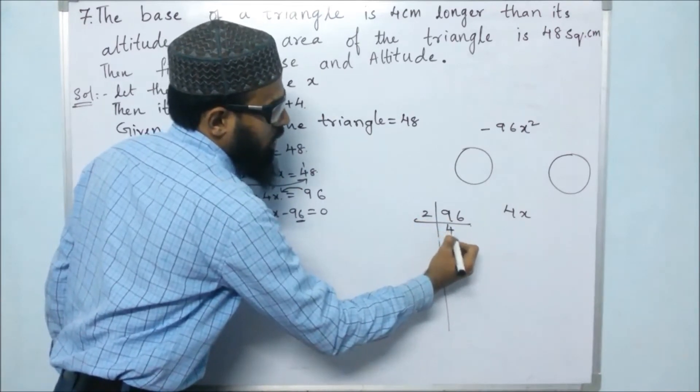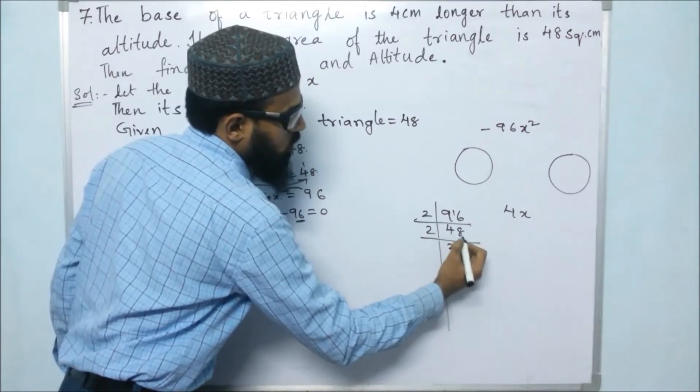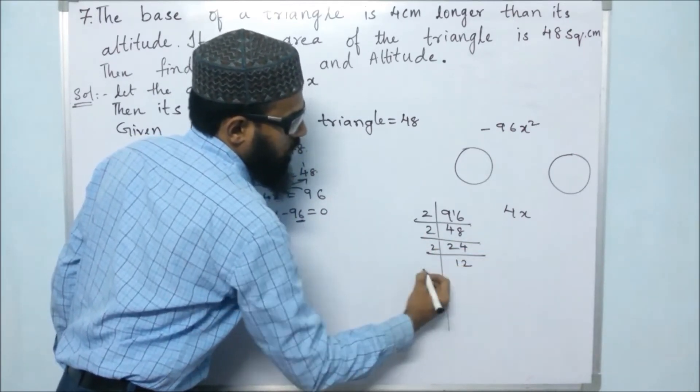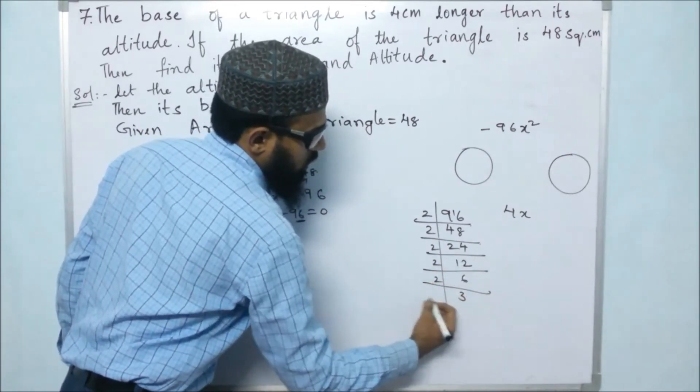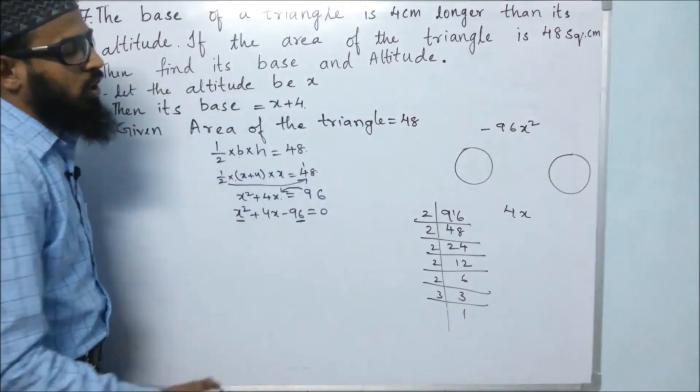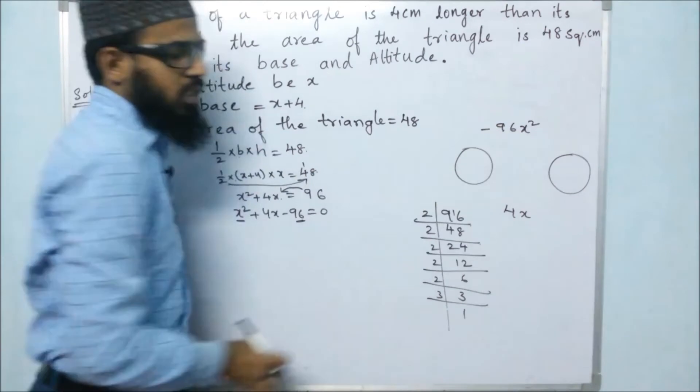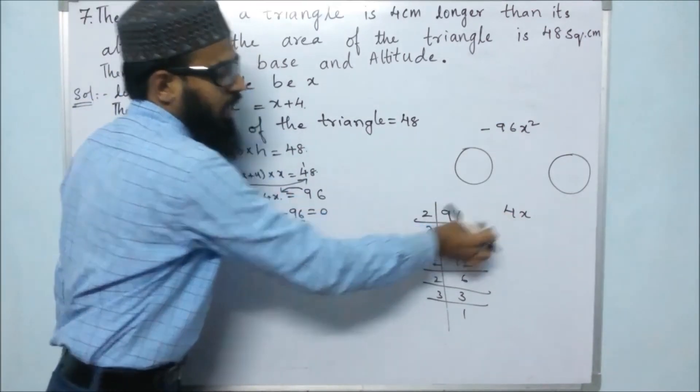2 fours are 8, 2 eights are 16, 2 twos are 4, 2 fours are 8, 2 twelves are 24, 2 sixes are 12, 2 threes are 6, 3 ones are 3. Where can it be possible for getting 96 if we multiply, and if we subtract or add, we should get 4?